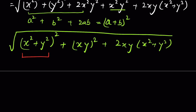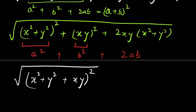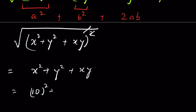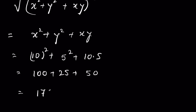Again, considering (x² + y²) as a single term and xy as another, the full expression (x² + y²)² + (xy)² + 2(x² + y²)(xy) is in the form a² + b² + 2ab, which equals (a + b)². So the entire expression becomes the square root of (x² + y² + xy)², which equals x² + y² + xy. Substituting x = 10 and y = 5: 10² + 5² + 10×5 = 100 + 25 + 50 = 175.